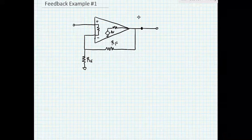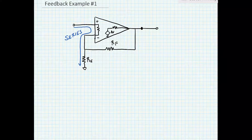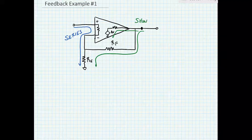At the input, if we put a signal in, we'd have to go through the amplifier and then through the feedback network to complete the circuit. So we know that this is a series connection. If we look at the output, from the perspective of the output we can go either through the feedback network or through the amplifier to complete the circuit. So we have a shunt connection at the output.